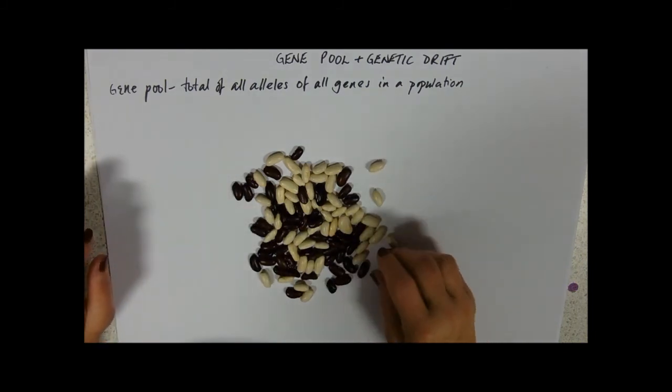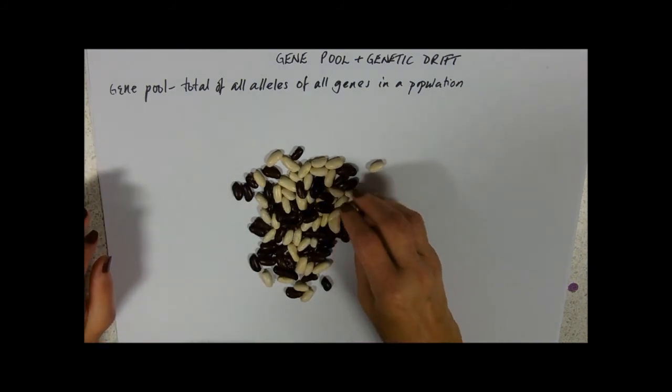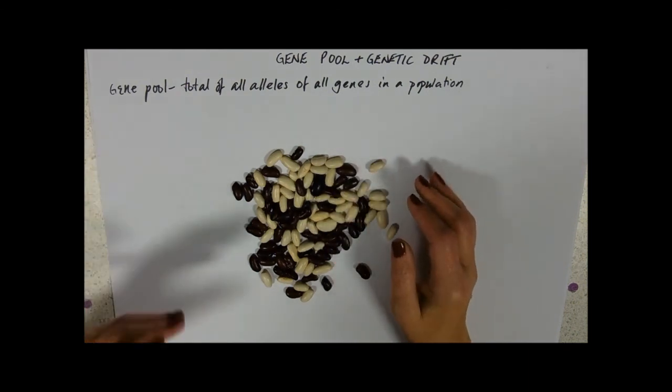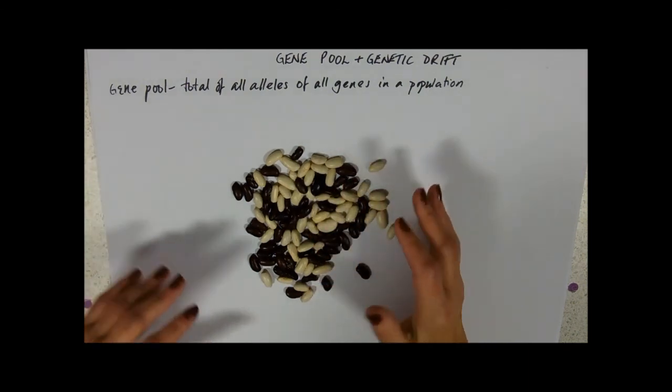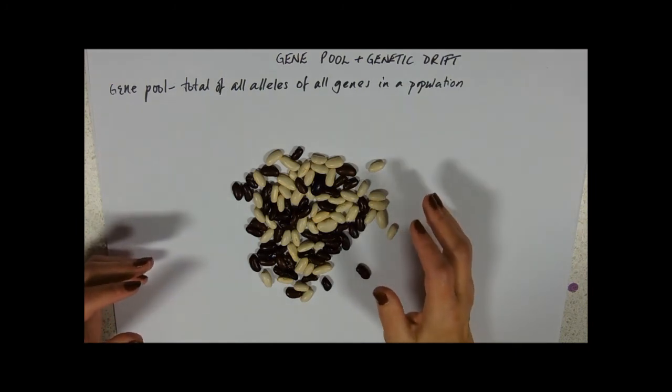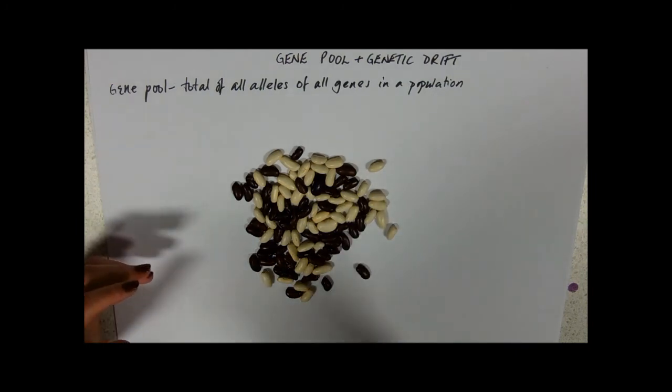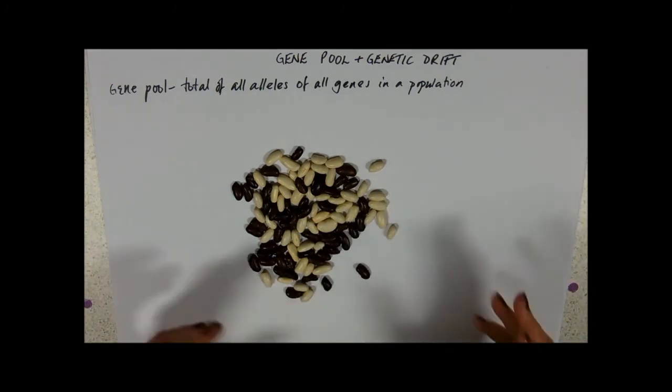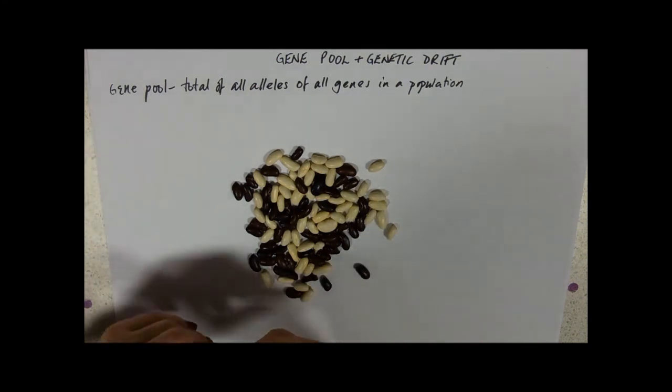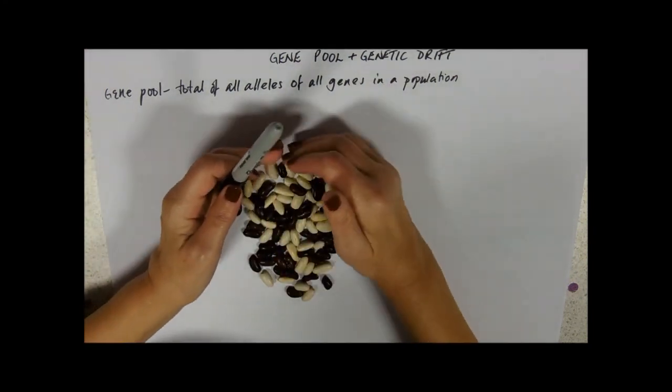But we're not going to talk about natural selection today, we're going to talk about genetic drift. So genetic drift happens when you've got a very small population, and the smaller the population the more likely it is to happen.